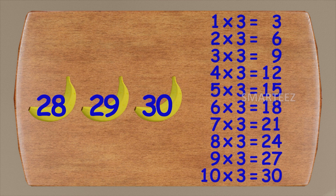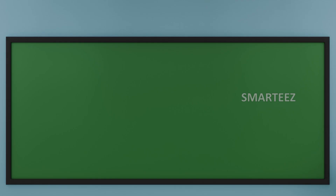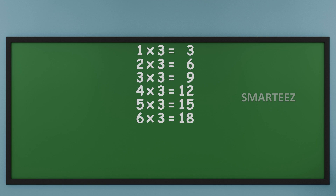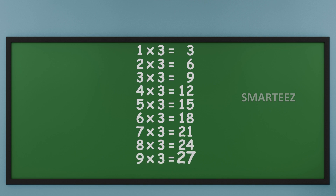Let's do the tables now. Take a look. One times three is three. Two times three is six. Three times three is nine. Four times three is twelve. Five times three is fifteen. Six times three is eighteen. Seven times three is twenty-one. Eight times three is twenty-four. Nine times three is twenty-seven.